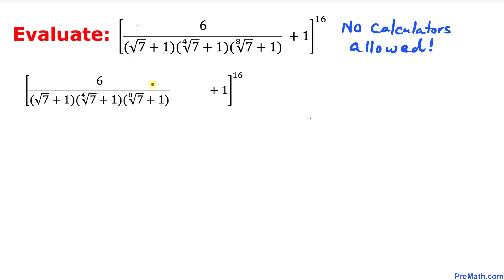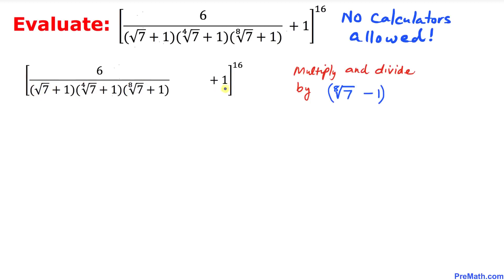Let's focus on the radicals in the denominator. This radical is of index 8, this radical is of index 4, and this radical is of index 2. Let's go ahead and manipulate this fraction by multiplying and dividing by the eighth root of 7 minus 1.